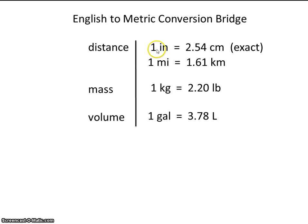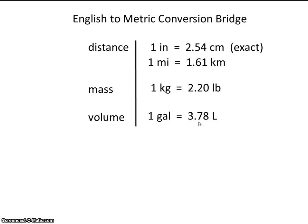The top one, remember, has an infinite number of significant figures. I included the gallon-to-liter conversion because it's actually written on some gallon jugs of milk, and sometimes even on a toilet where it says one gallon per flush or 3.8 liters per flush.